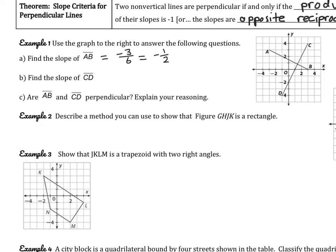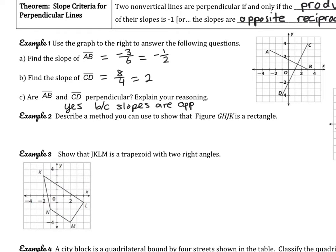For part B, find the slope of CD. Remember we always go left to right. Going up 8 over 4 gives a slope of positive 2. We could also find points in between — up 2 over 1 — and get the same slope. Now comparing the slopes: we have positive 2 over 1 and negative 1 half, which are opposite reciprocals, so yes, AB and CD are perpendicular.